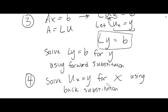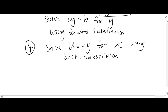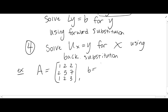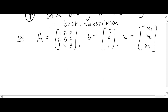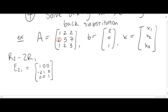Let's do an example. Say your matrix A is (1, 2, 2 / 2, 5, 7 / 1, 2, 3) with right-hand side vector B equal to (2, 0, 1). We want to reduce A to an upper triangular matrix. To reduce the (2,1) entry, do row 2 minus 2 times row 1, represented by E₂₁. Multiplying E₂₁ times A gives: 2 minus 2 is 0, 5 minus 4 is 1 (should be 3), 7 minus 4 is 3. The third row is unchanged.